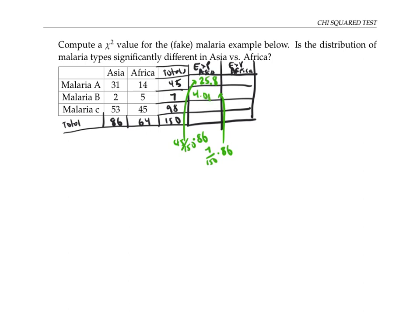And for malaria C, we do the same computation. The overall proportion of malaria C is 98 out of 150 cases. So we're taking that proportion times the 86 cases in Asia. So that gives me 56.19. I can do the same calculations to get the expected number of malaria cases of each strain in Africa.